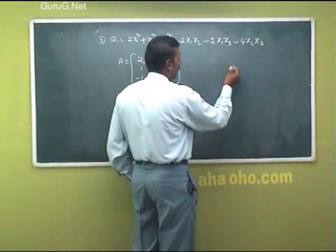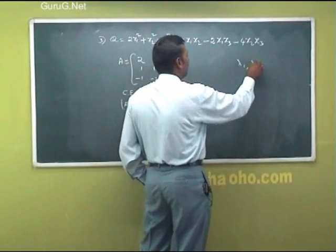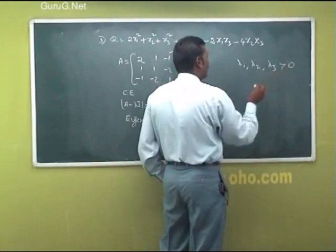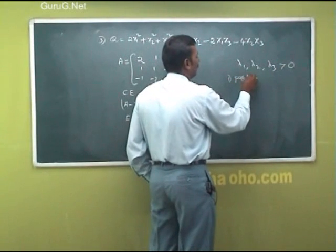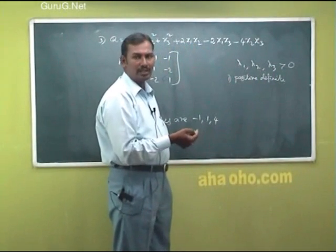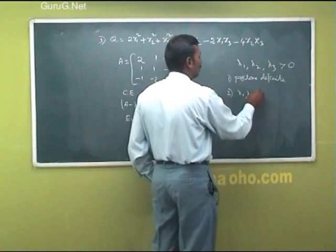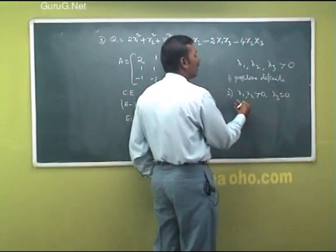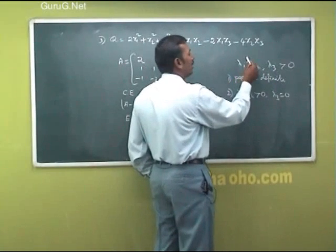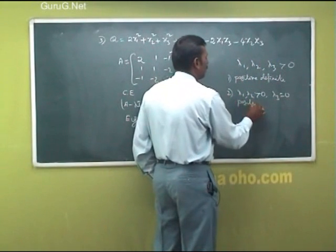Suppose it is a quadratic form of 3 variables. We get a matrix of order 3 with three eigenvalues: λ₁, λ₂, λ₃. If all the eigenvalues are positive, we call it positive definite. If all eigenvalues are positive and at least one is zero — for example λ₁, λ₂ positive and λ₃ = 0, or λ₁, λ₃ positive and λ₂ = 0 — we call it positive semi-definite.